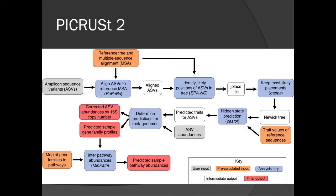The new pipeline is more flexible. I'm going to walk you through the different steps. The input is both the sequences themselves — I'm going to use the term ASVs for amplicon sequence variants, so the actual 16S sequences — and also their abundances. Beforehand with PyCRUST 1, you would essentially start at the last portion, and all of the earlier steps were pre-calculated. But now as a user you're going to run those parts of the pipeline yourself, which gives much more flexibility in what you can provide as input to PyCRUST.